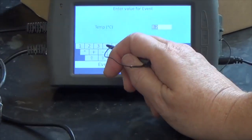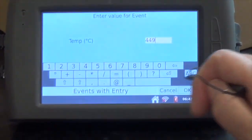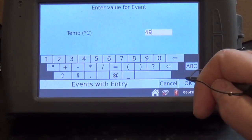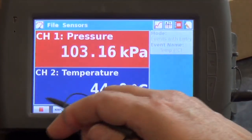As you measure each point remember to use events with entry by hitting the keep button and then typing in the actual temperature at the time that you are making the measurement.